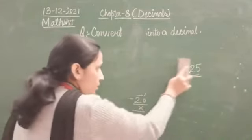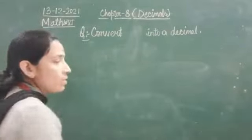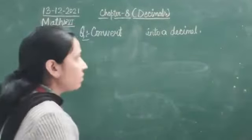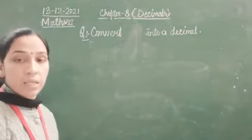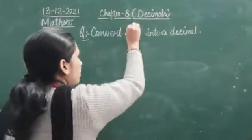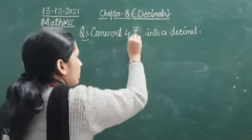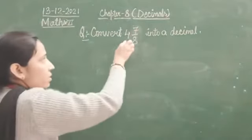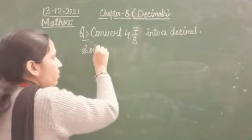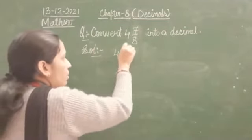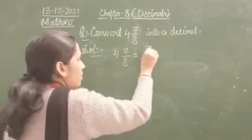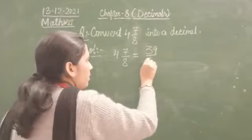Now, mixed fraction — we need to convert it into improper fraction. What do we mean by improper fraction? Where the numerator is greater than denominator. So, 4 and 7 by 8. The first step is to convert it into improper fraction: 8 fours are 32, plus 7, that gives us 39 by 8.